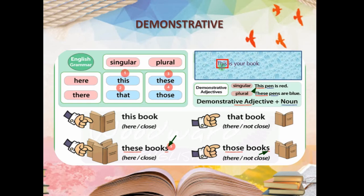Always keep in mind: whenever you have to identify a determiner, check whether a noun follows. In 'This is your book,' the determiner is 'your' (possessive), not 'this.' 'This' here is a pronoun because no noun follows it directly. So: determiners always precede a noun — that noun is mandatory. And then according to that, you have your identification.